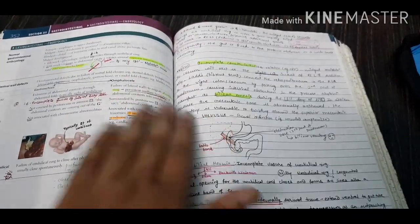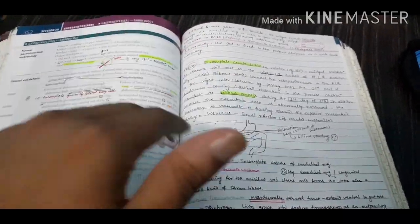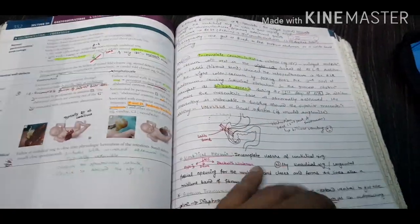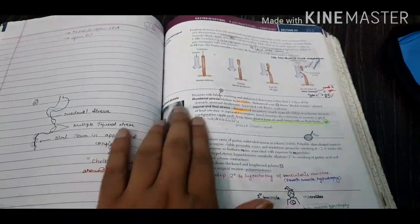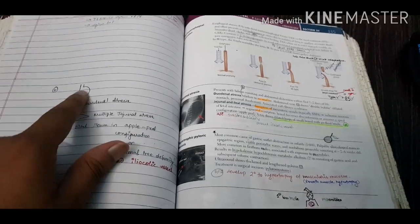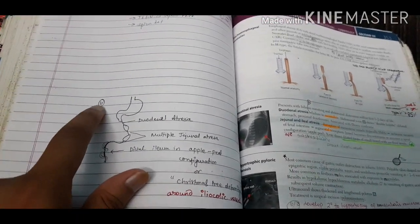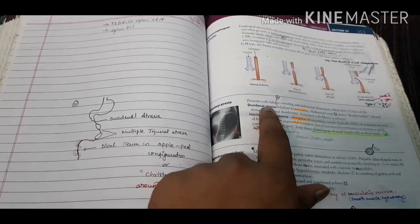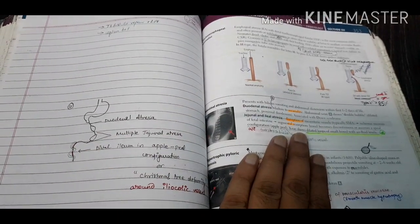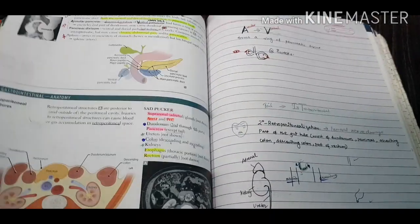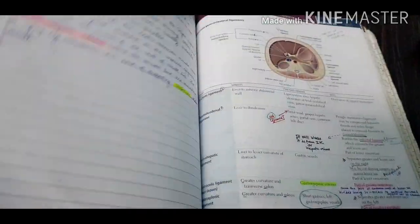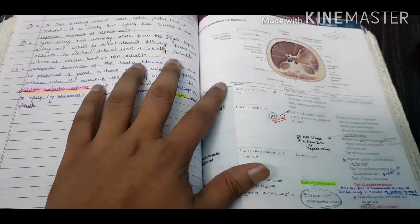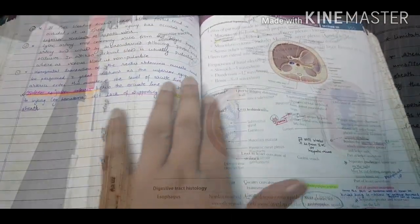For example, here you can see I've drawn this picture, and this picture is from UWorld, as you can see I've labeled UWorld here. This is related to duodenal atresia, which is on this side of the book. This way I've annotated my whole book so that the relevant related information will be present on the side of the respective pages.